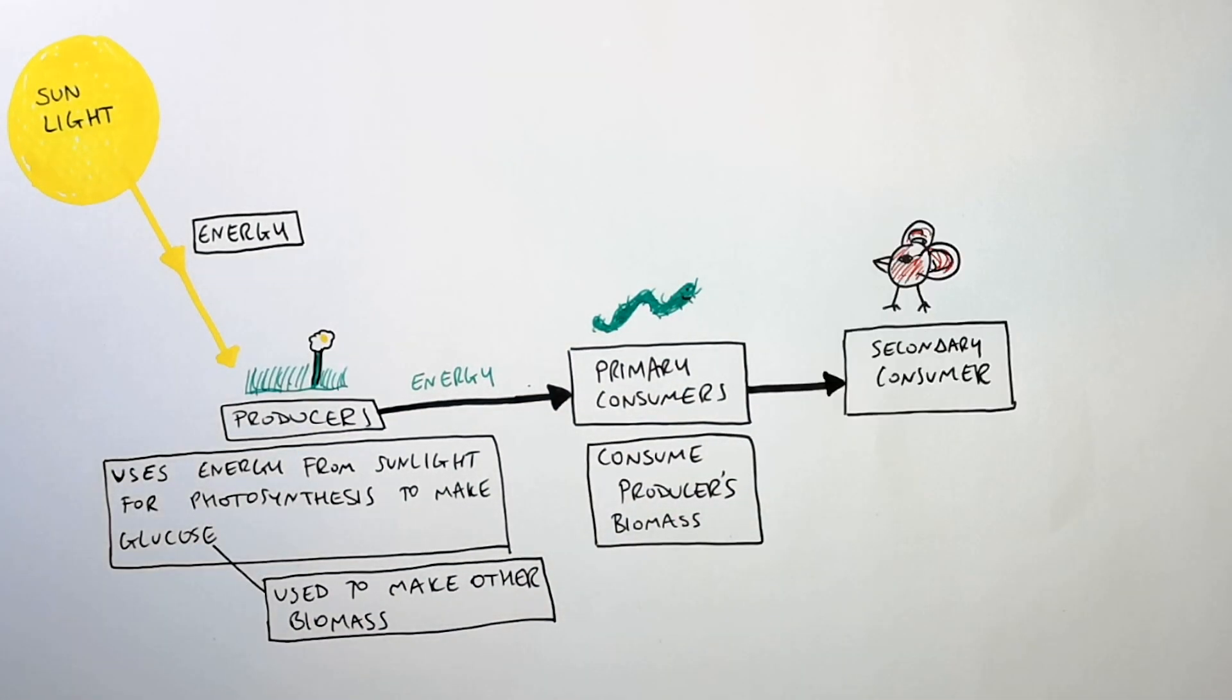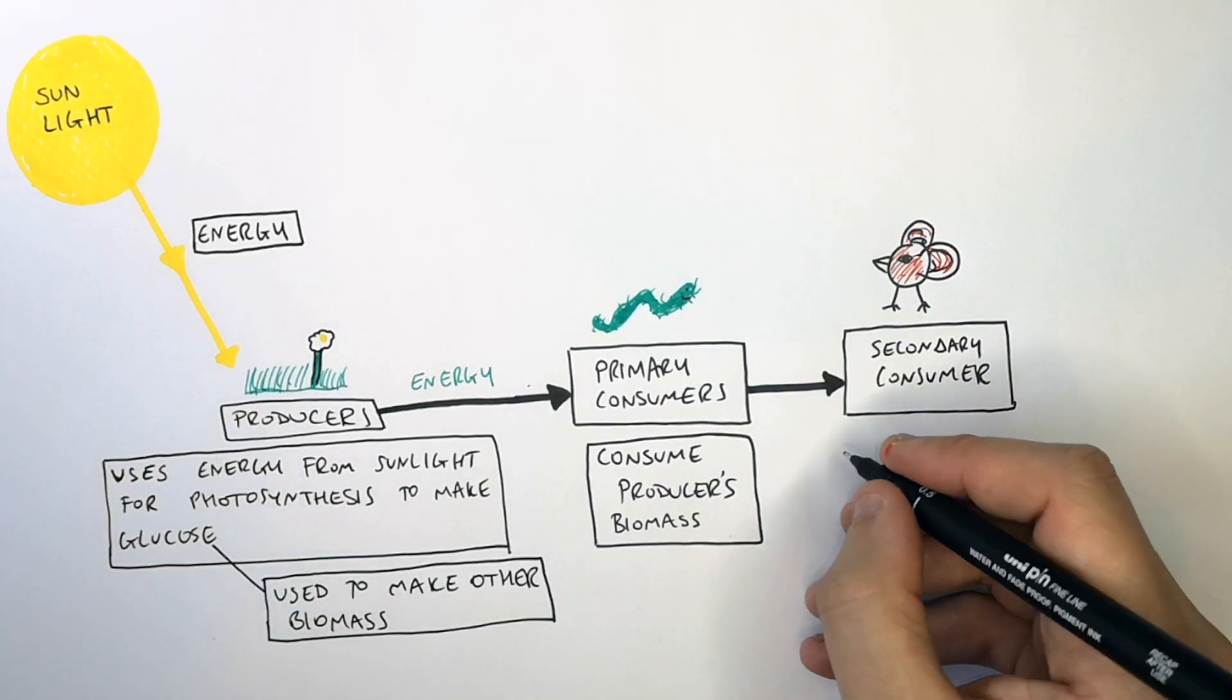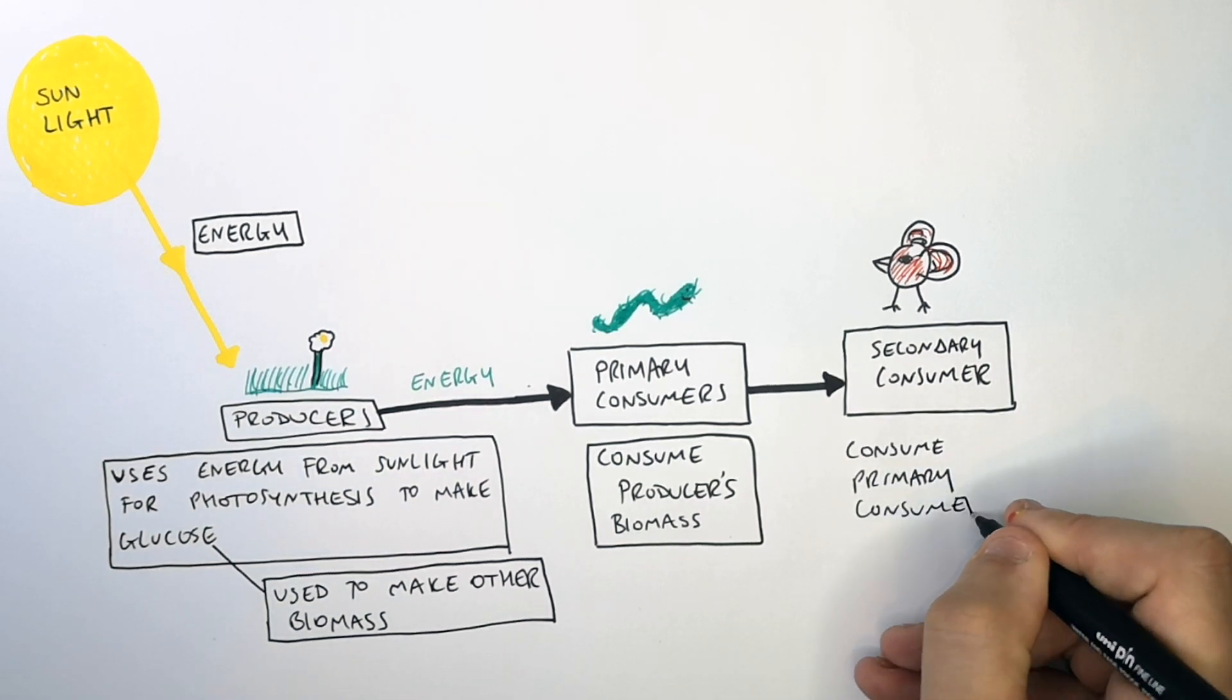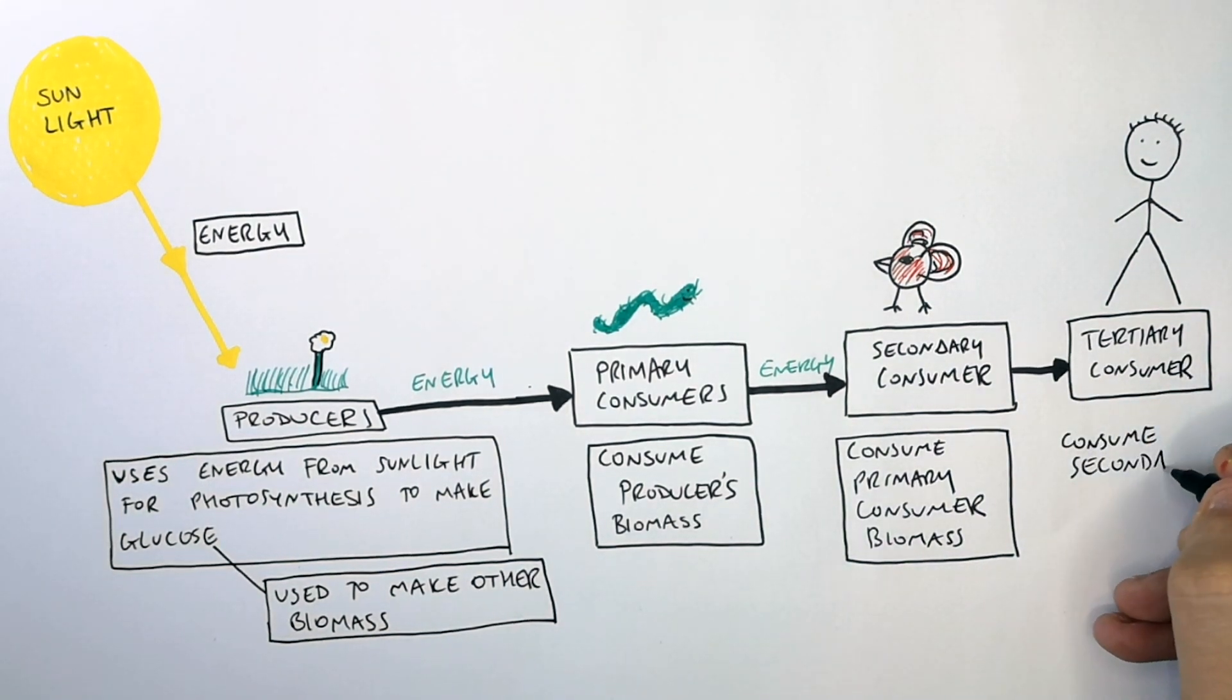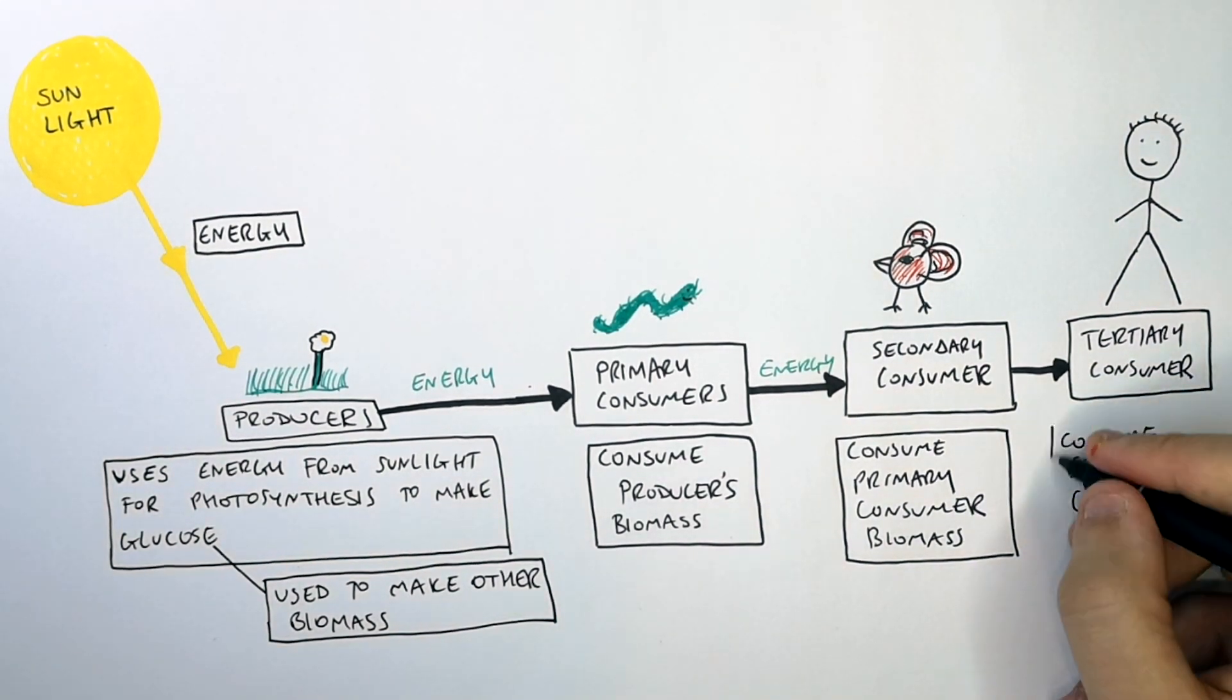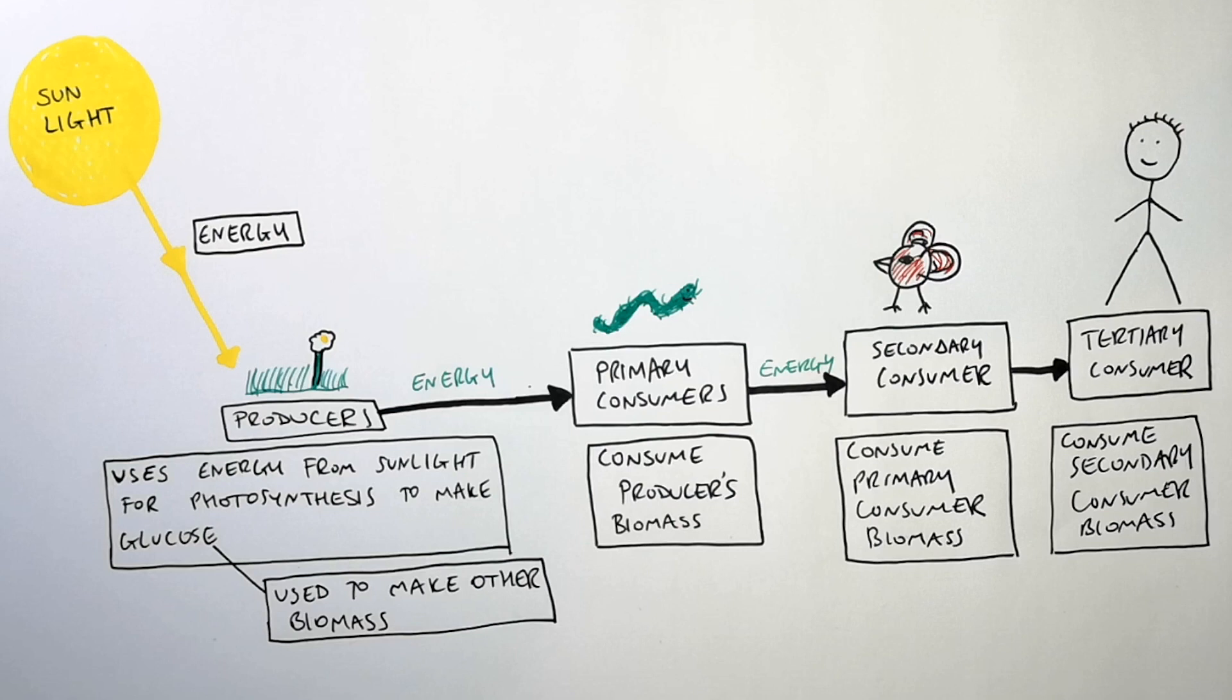The secondary consumer will then eat the biomass of the primary consumer. The secondary consumer consumes the primary consumer's biomass and the tertiary consumer, in this case a human, eats the bird and there is a transfer of energy from the bird to the human via the biomass of the bird.